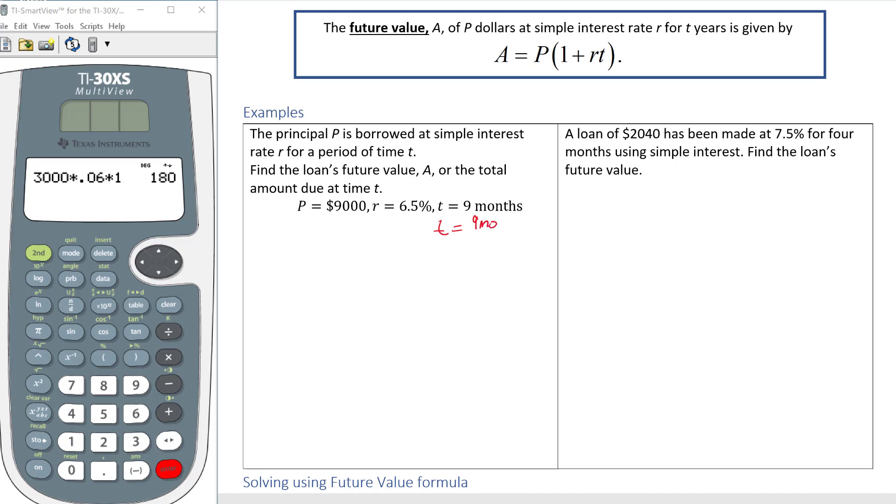So 9 months, if I divide that by 12 months, I can reduce and the months divide out, and that will get me, let's see, 9 divided by 12, that's reduced to 3 fourths of a year.